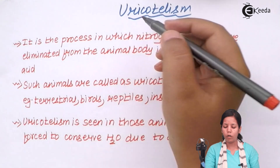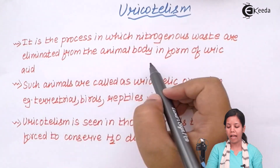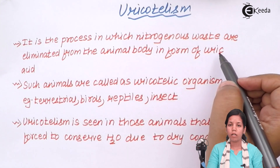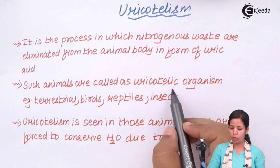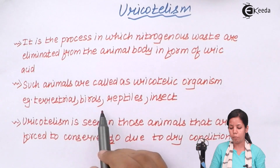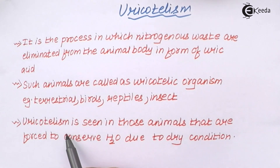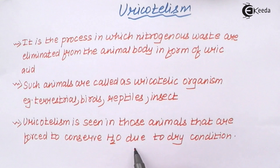Uricotelism is a process in which nitrogenous wastes are eliminated from the animal body in the form of uric acid. The organisms in which uric acid is formed are termed as uricotelic organisms, and they include certain terrestrial animals, birds, reptiles, and insects. Uricotelism is seen in those animals that are forced to conserve water due to dry or harsh climatic conditions.